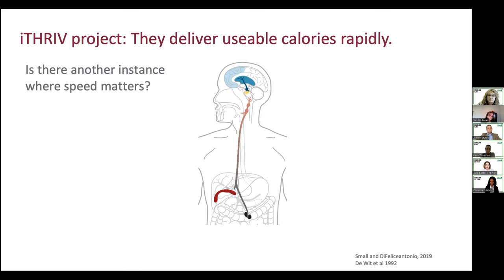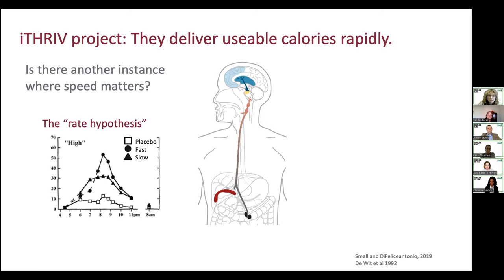Another area where speed matters is drugs of abuse — this is known as the rate hypothesis. Drugs that get to the brain faster have higher addictive potential. Clinicians think about route of administration: something injected or snorted has much higher abuse potential than something ingested.